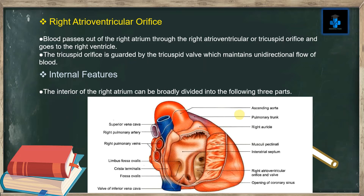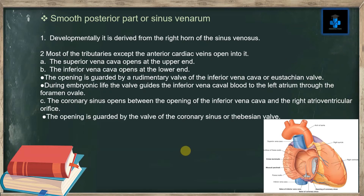The interior of the right atrium can be broadly divided into three parts. Looking at the diagram: the superior vena cava, the inferior vena cava, the opening of the coronary sinus, the fossa ovalis, the crista terminalis, the right pulmonary veins, the right auricle covering the ascending aorta, and the pulmonary trunk are all visible. The three parts are: the smooth posterior part or sinus venarum, the rough anterior part, and the interatrial septum.